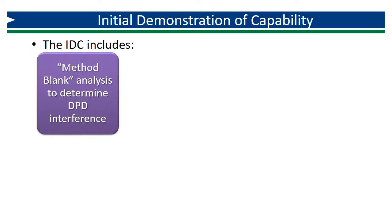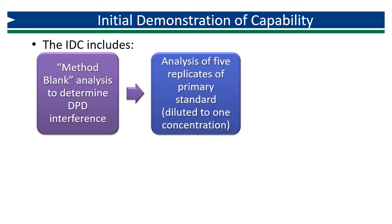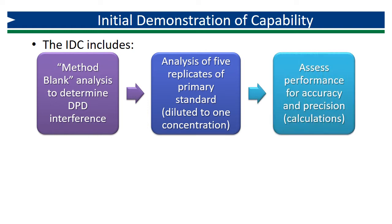To complete an IDC for the GRAB method, the analyst begins by analyzing a method blank to determine interference from the DPD reagent. The analyst then analyzes five replicates of a diluted primary check standard at one concentration and records the results. Finally, the analyst completes the calculations to determine their accuracy and precision.